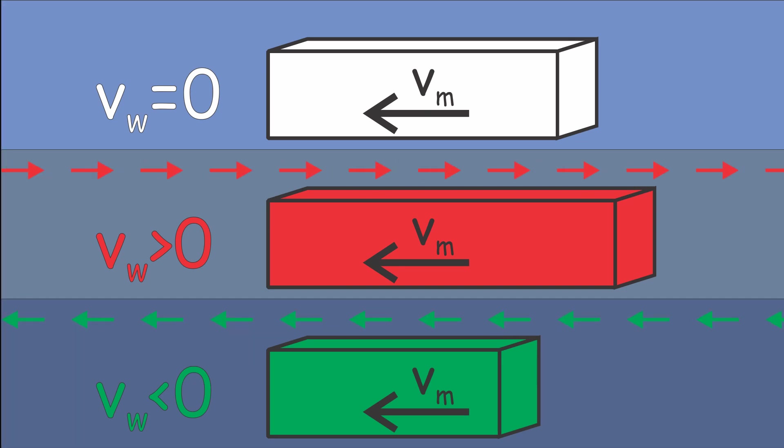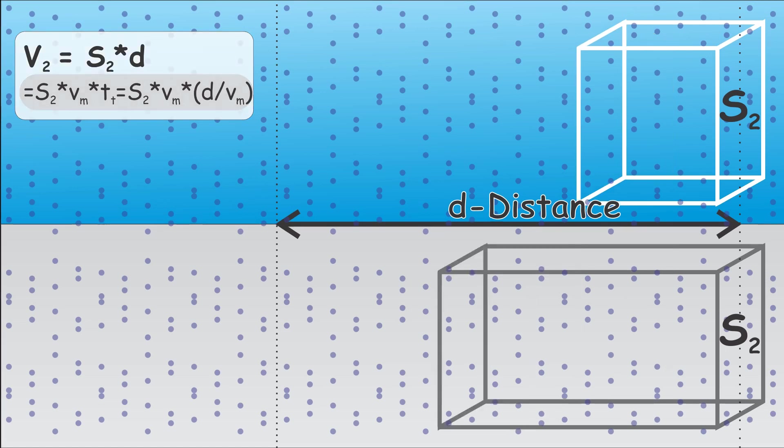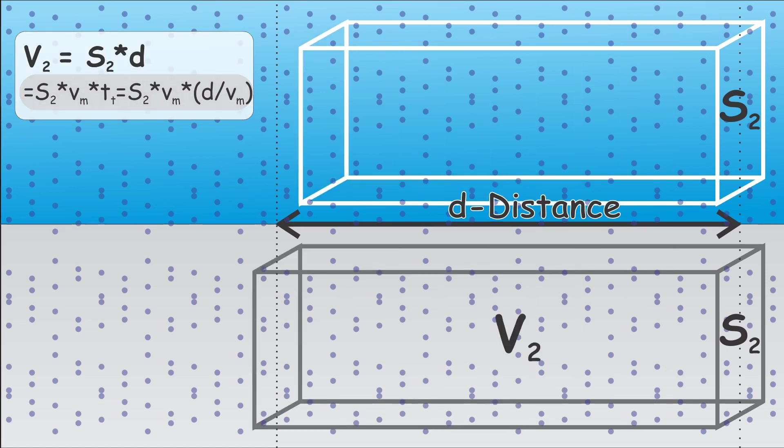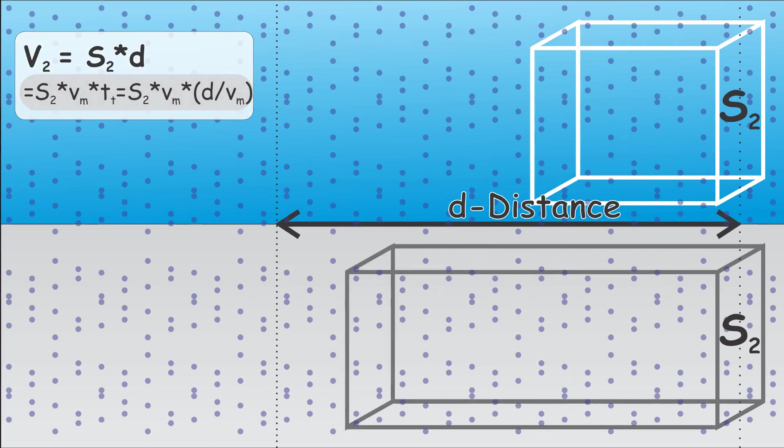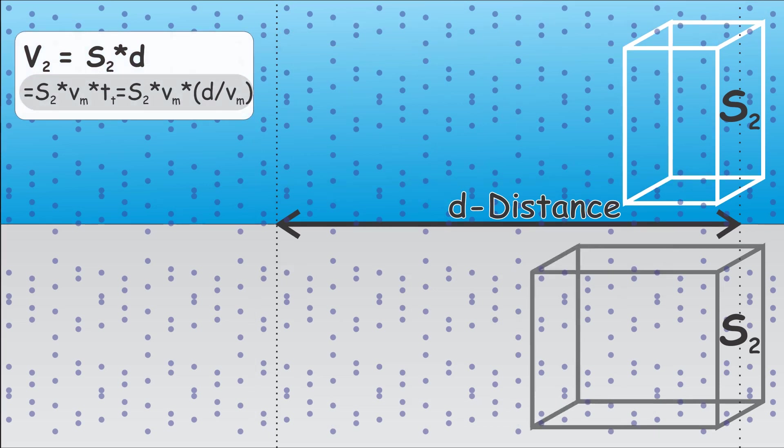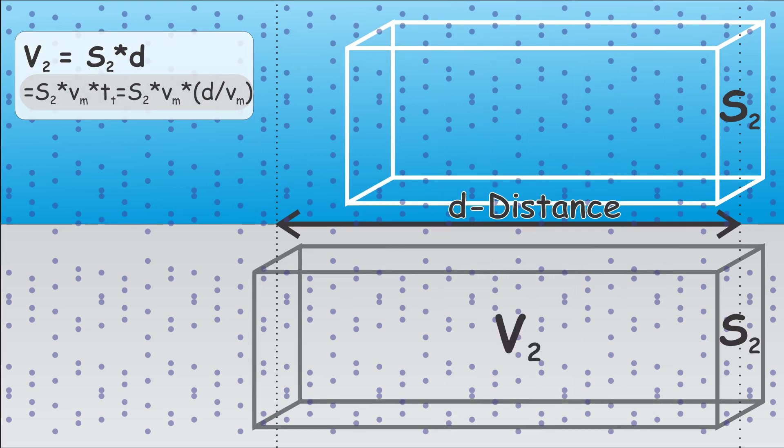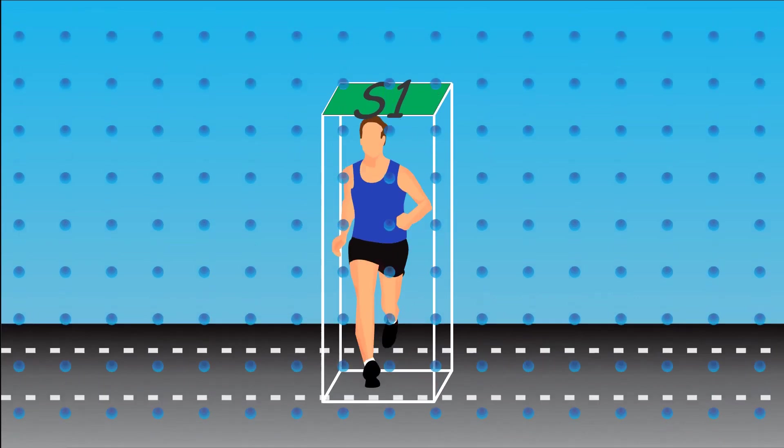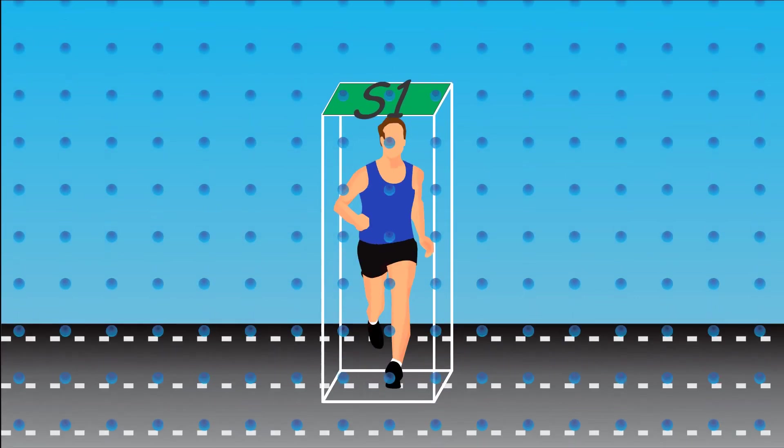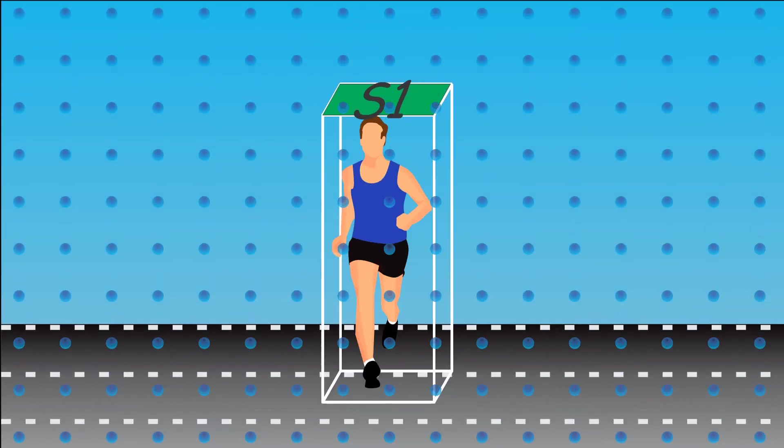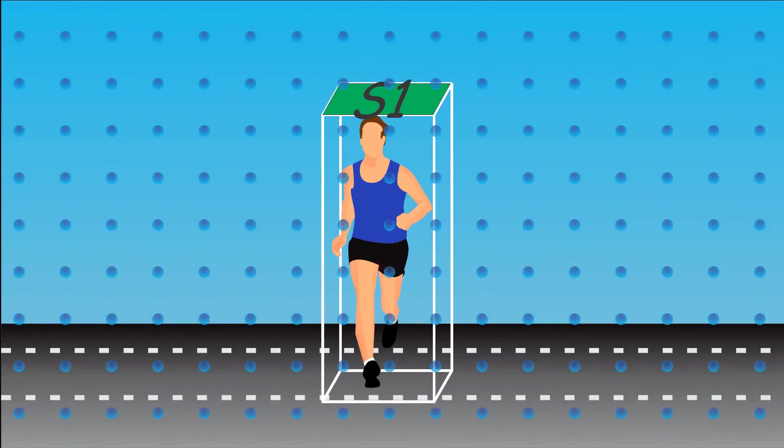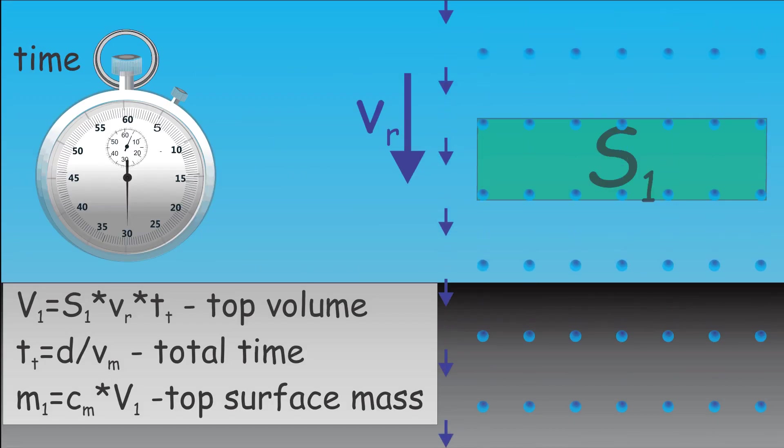It is interesting that if there is no wind, the amount of rain taken by the front part is always the same, because we cover the same volume when we are moving fast or slow. The amount of rain that falls on the top surface isn't affected by moving or wind, because the mass concentration stays the same. The volume of rain that falls on the top surface can be determined by multiplying the top surface area with the rain speed and the total time.